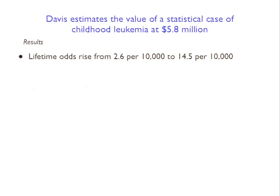The lifetime odds by his estimate rise from basically 2.6 cases per 10,000 people to 14.5 cases of leukemia per 10,000 people. So the change in risk is 11.9 over 10,000 - the difference between 14.5 and 2.6 - which works out to 0.0012.